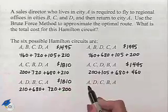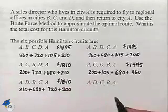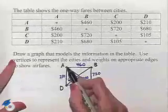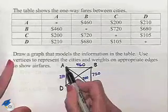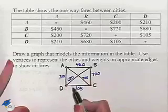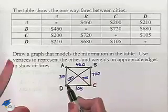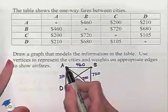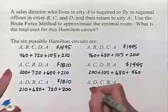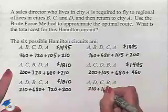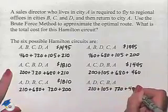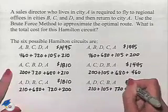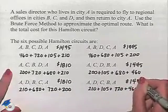And finally, A, D, C, B, A. That's A to D to C to B to A. So we're going to be moving around the square in the opposite direction. That's 210, 105, 720, and 460. 210 plus 105 plus 720 plus 460. And that total is 1,495.